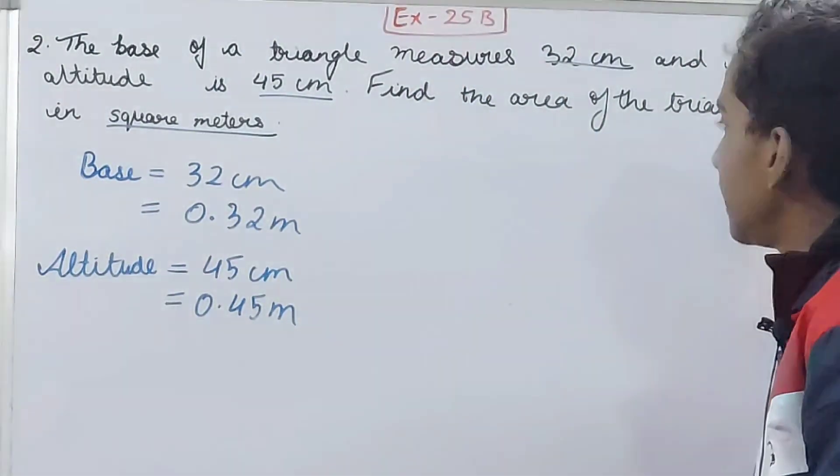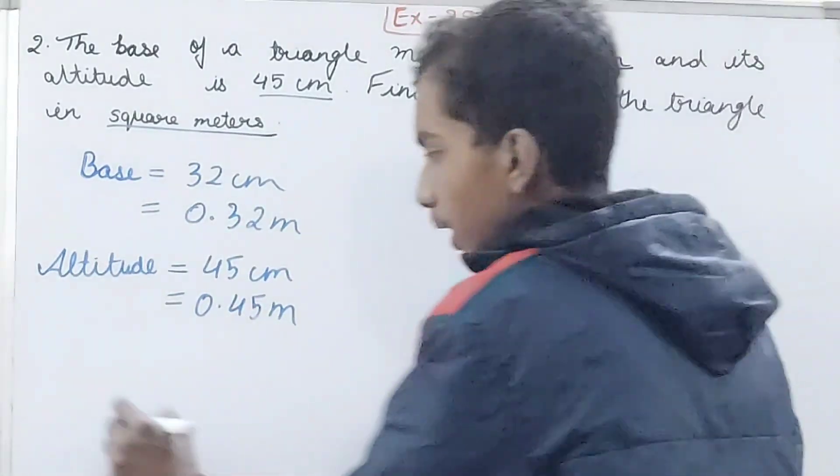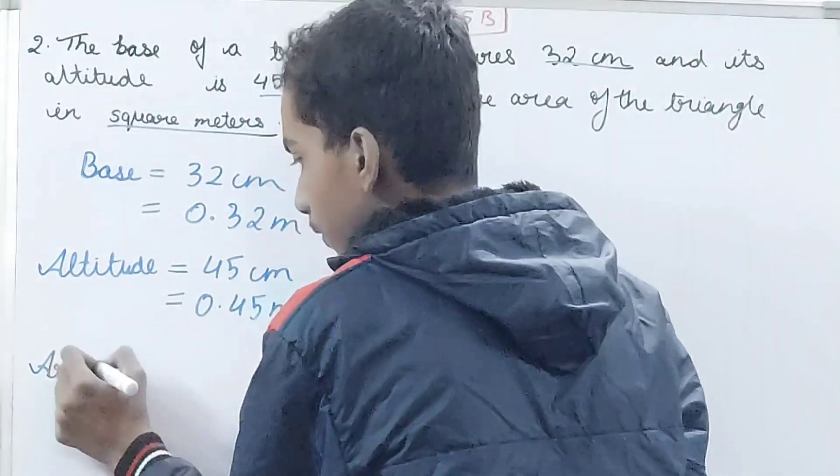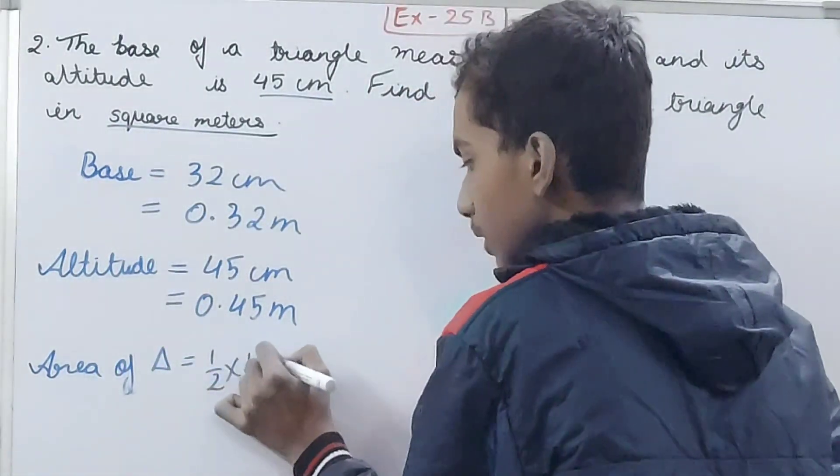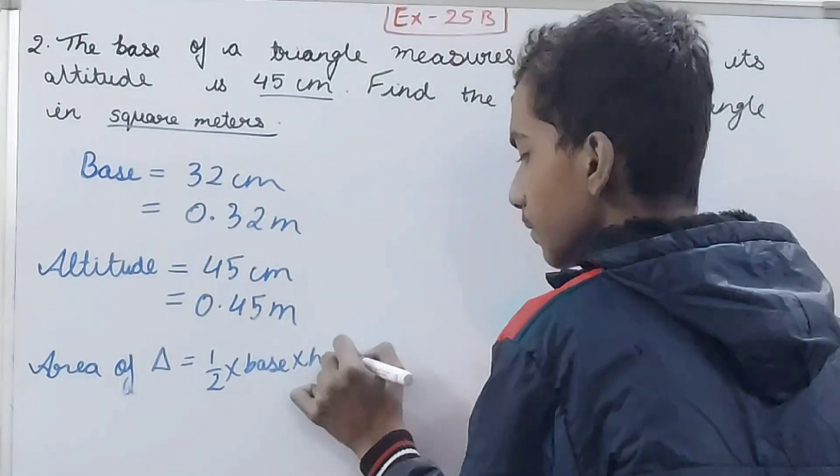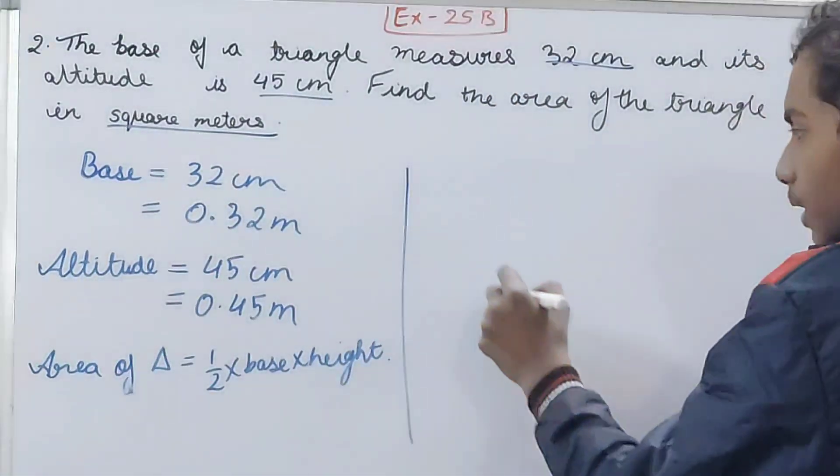The altitude is 45 centimeters. In meters, this will become 0.45 meters. Now, to find the area of the triangle in square meters: area of triangle equals 1/2 × base × height. So calculate: we will have